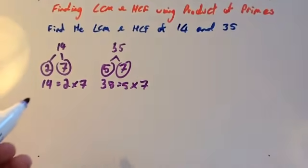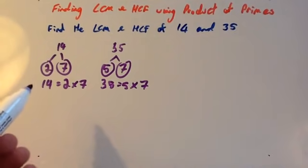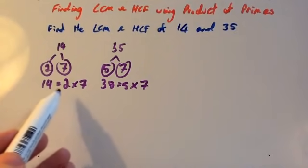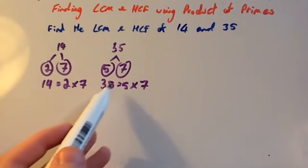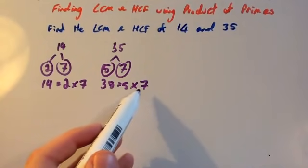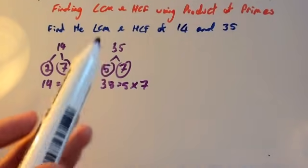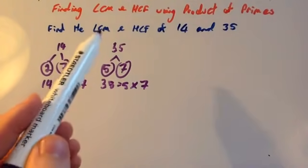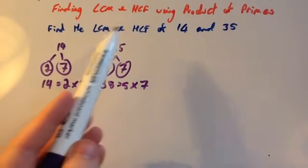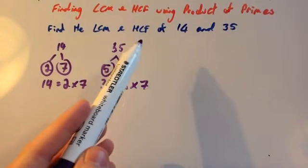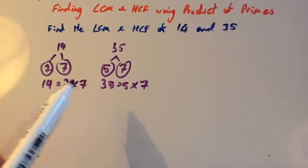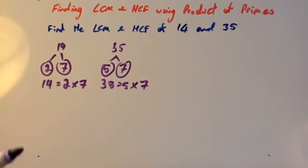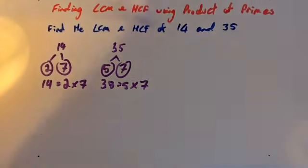We've written both numbers as a product of primes: 14 is 2 times 7 and 35 is 5 times 7. Now, to find the lowest common multiple and highest common factor using these product of primes, it's useful to draw a Venn diagram.